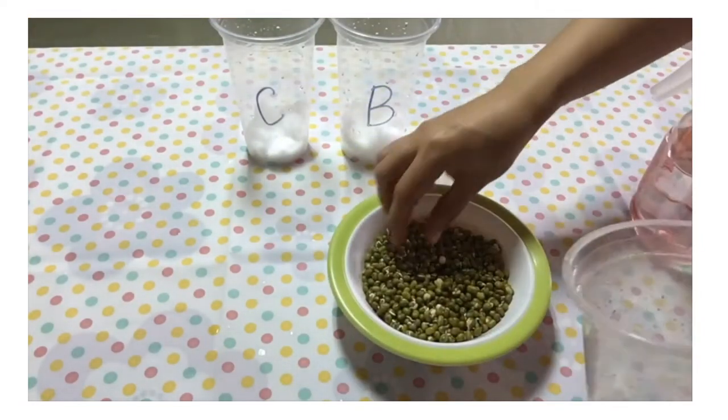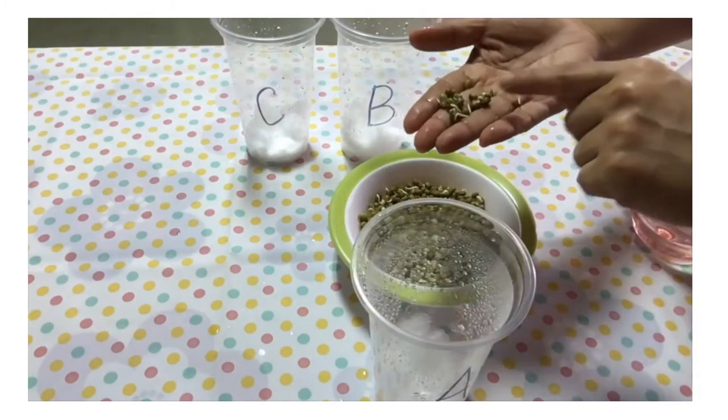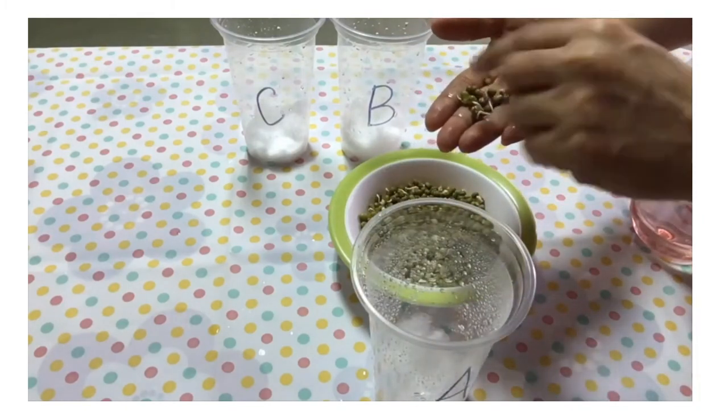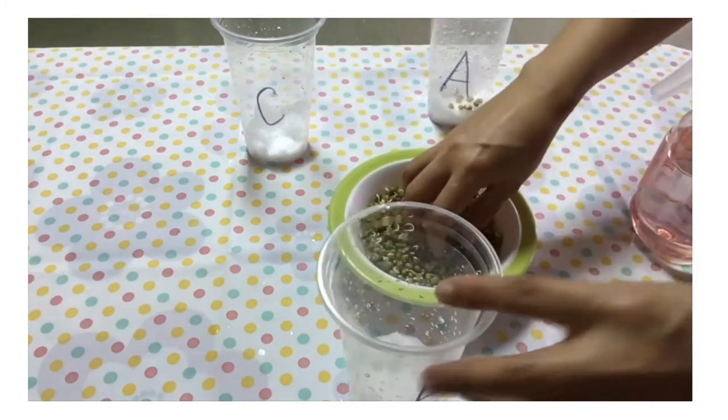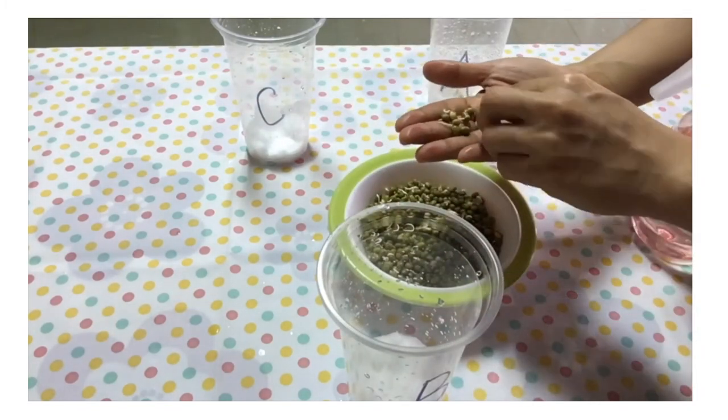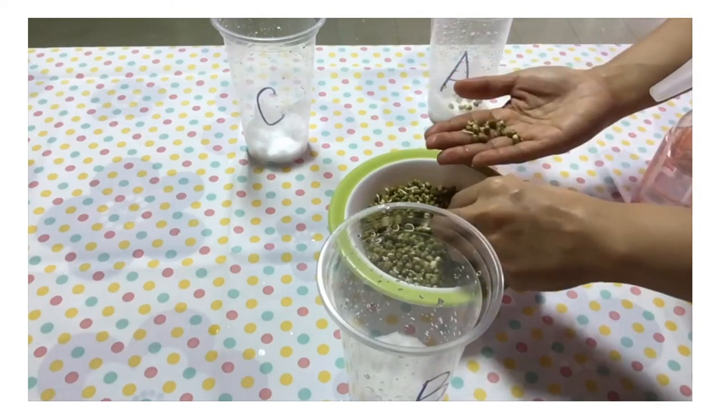Next, number 5: Put around 10 pieces of mung bean seeds inside the cup. Do it on cups A, B, and C.